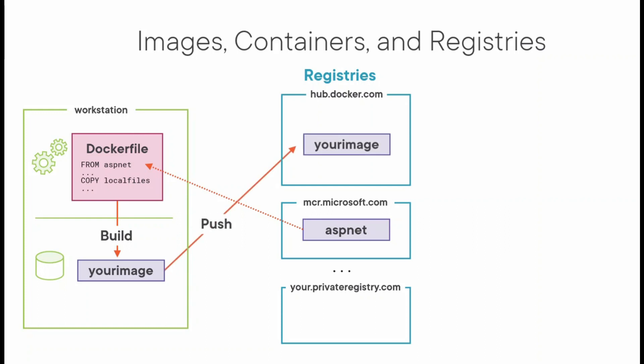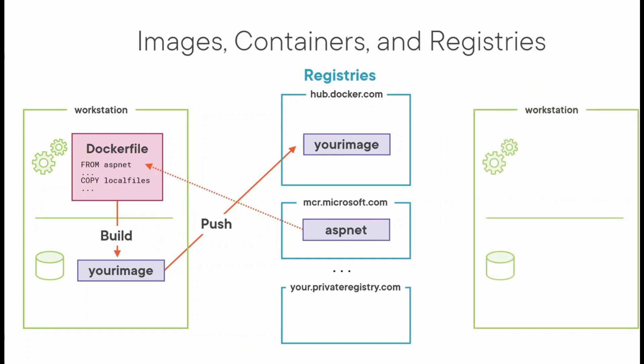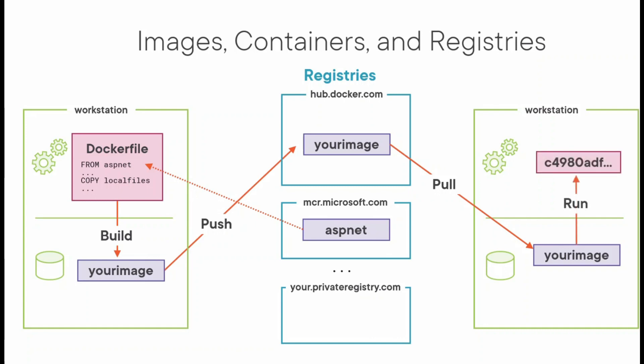The Dockerfile's FROM line references an image in one of these registries. We build our application code using the Dockerfile, which creates an image stored in a local image database on our workstation. Once built, we can push the image to the registry — by default hub.docker.com. Other workstations can then pull the image and use a run command to create a container, which is an instance of that image.